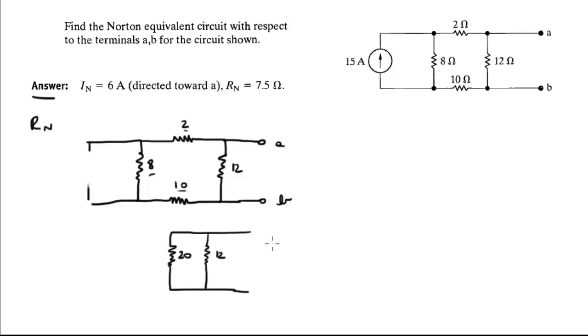And then we got 20 in parallel with 12. This is A, this is B. And this becomes 7.5 ohms, because it's 20 in parallel with 12. And 20 is 2, 8, and 10 in series. So this 7.5 is equal to the Norton resistance.